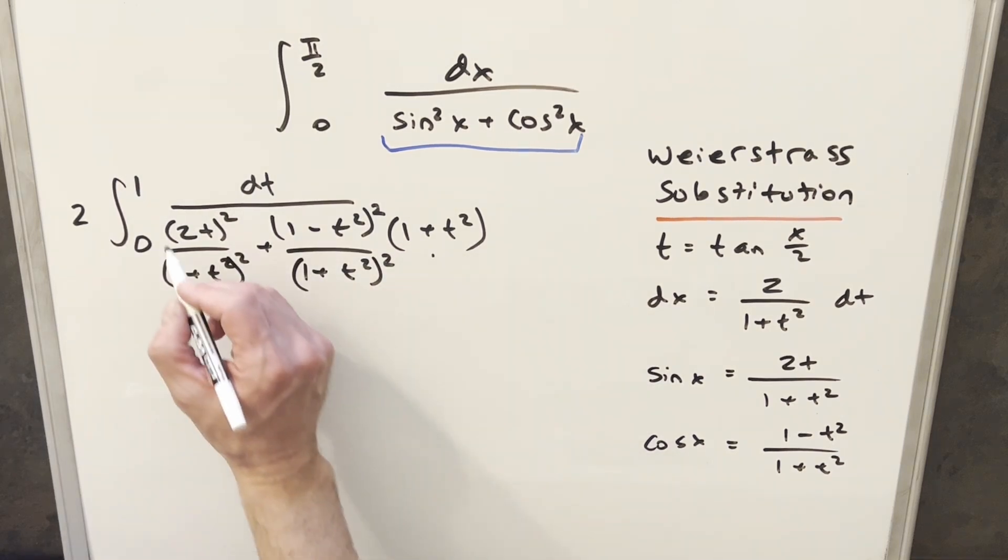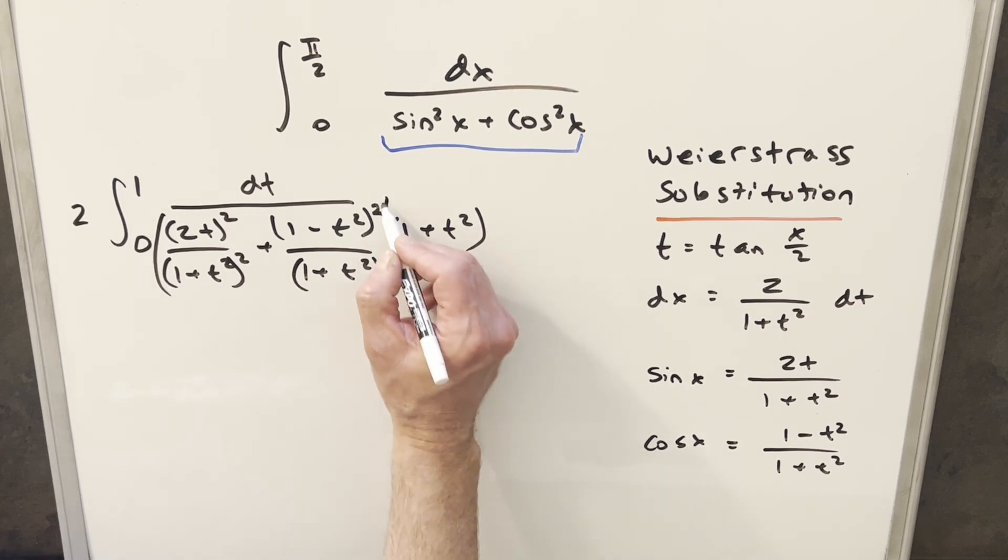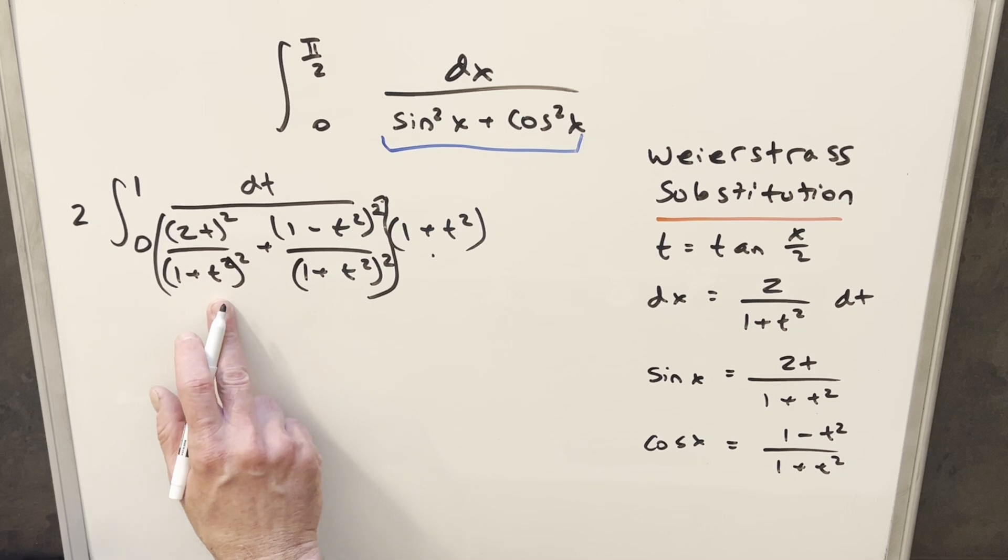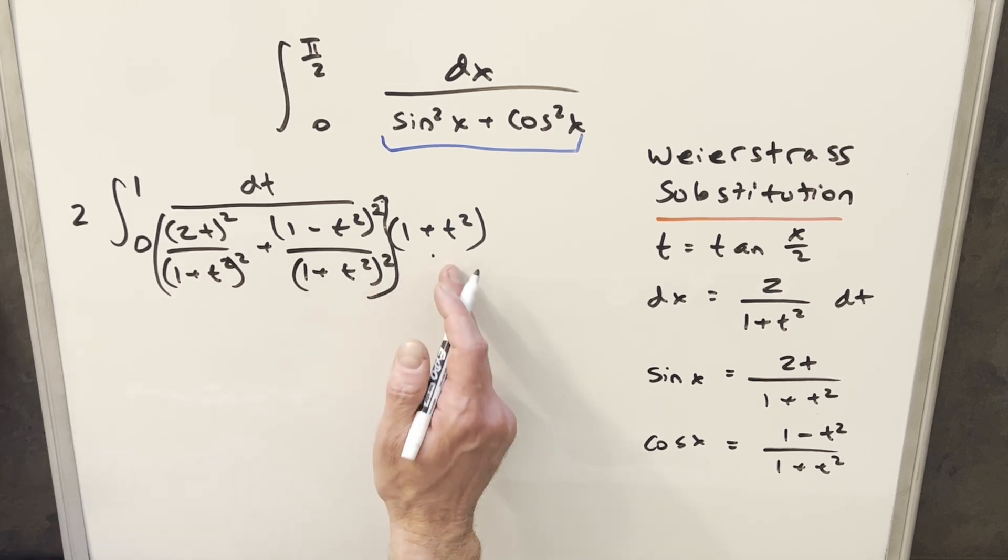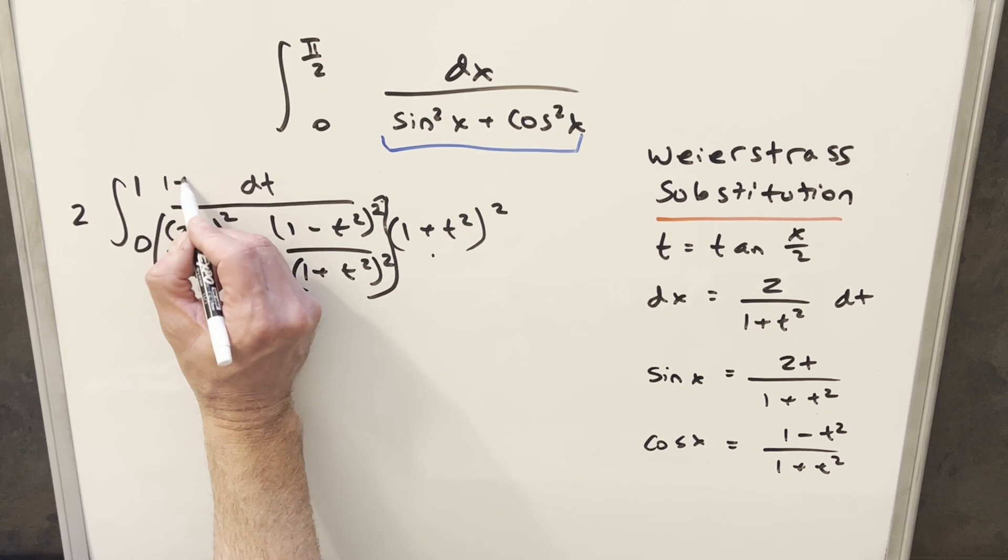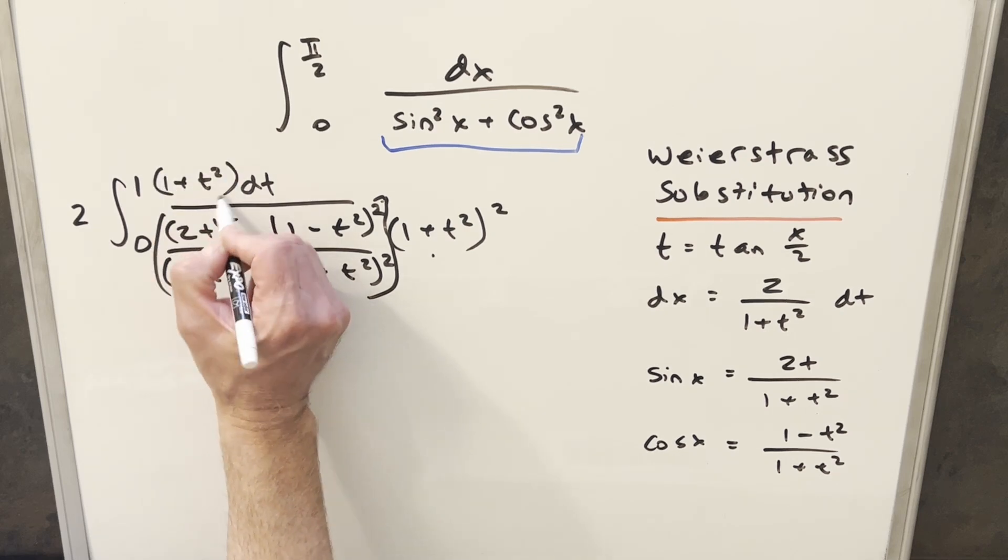But now I'm going to want to distribute this in. Let me make parentheses just to make this clear here. But what I really want to do, I don't want to just cancel out one copy of the 1 plus t². I want 2. So I want to square this, but I don't want to change it. So I'll multiply by 1 plus t² here in the numerator.